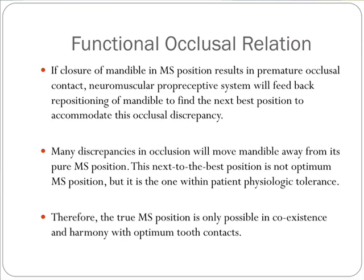In other words, when all these conditions above are met, we can call it the orthopedically stable position. If closure of the mandible in the musculoskeletal position results in premature occlusal contact, the neuromuscular proprioceptive system will feed back a repositioning of the mandible to find the next best position for accommodating this occlusal discrepancy. Many discrepancies in occlusion will move the mandible away from its pure musculoskeletal and orthopedically stable position. Therefore, the musculoskeletal stable position is only possible in coexistence and in harmony with optimum tooth contact.